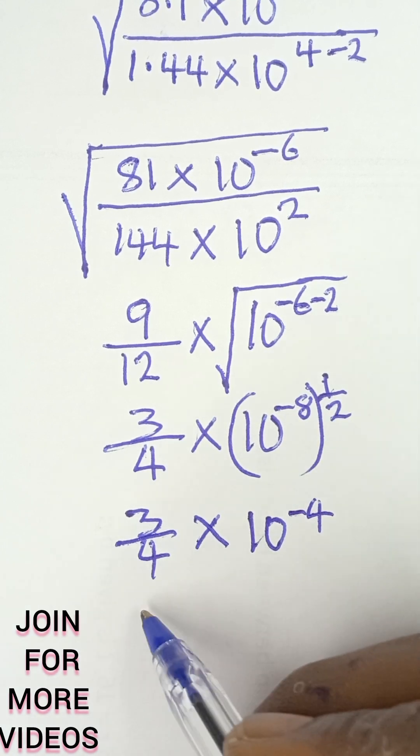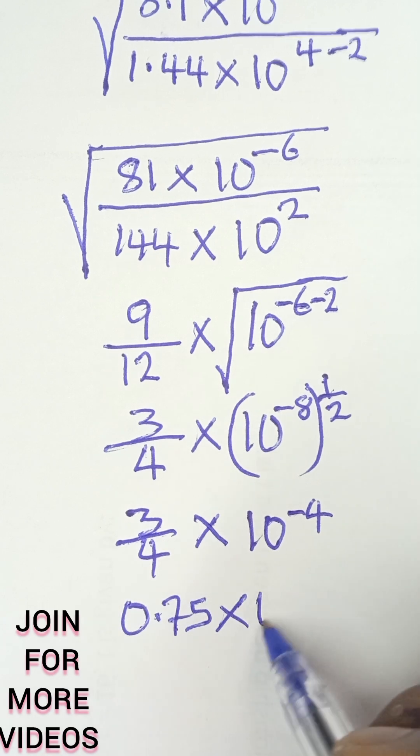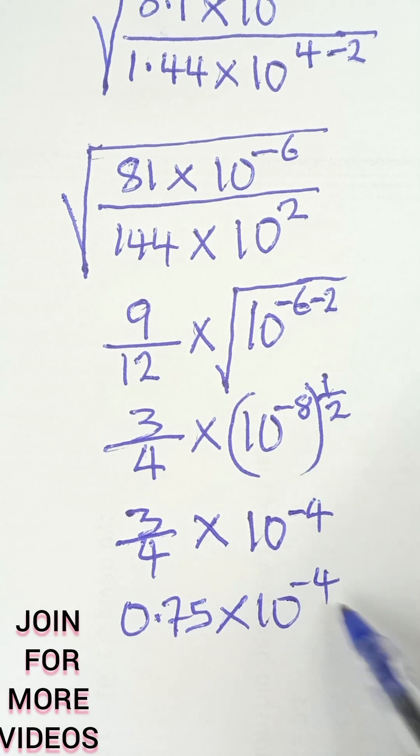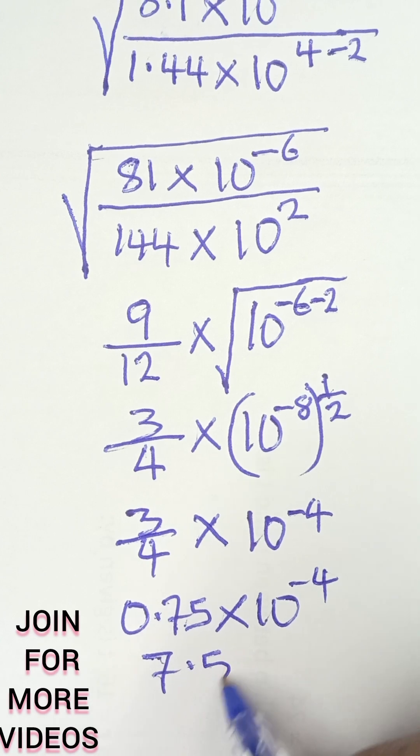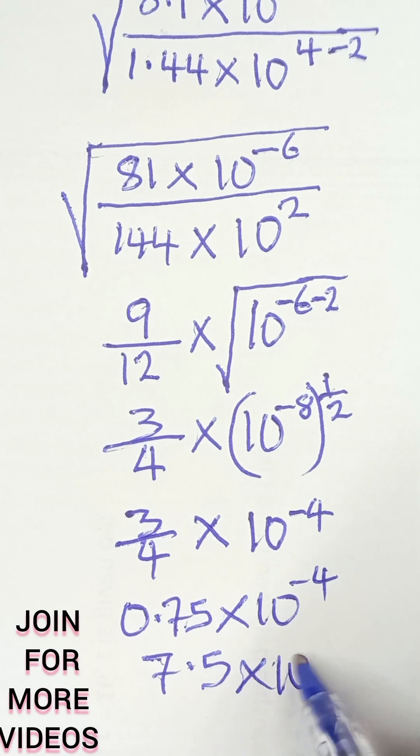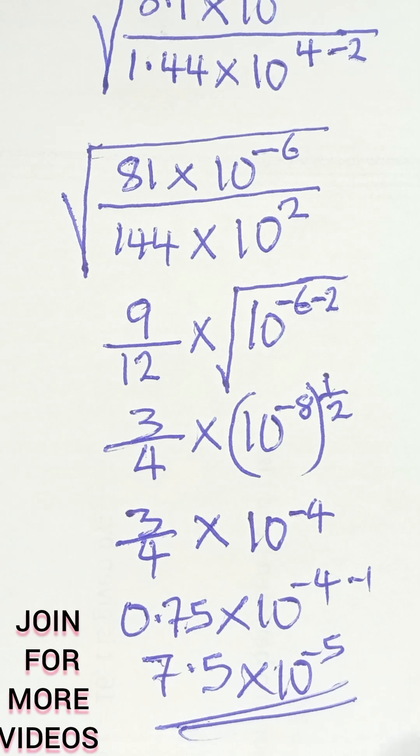So I can simply call this 0.75 multiplied by 10 raised to the power negative 4. If I move this once, it becomes 7.5, and then times 10 raised to the power negative 5, subtract 1 from this negative 4, and that becomes the final answer.